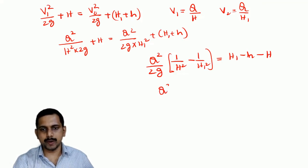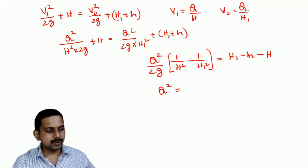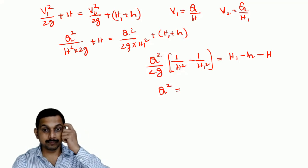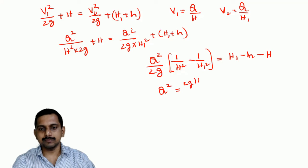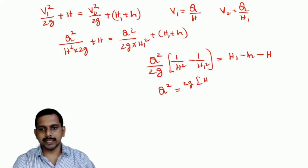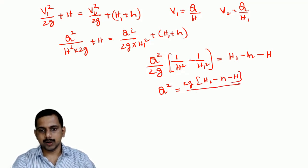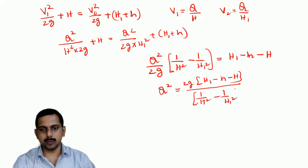Now, this means, Q square would be equal to 2g into h1 minus small h minus capital H divided by 1 by h square minus 1 by h1 square.